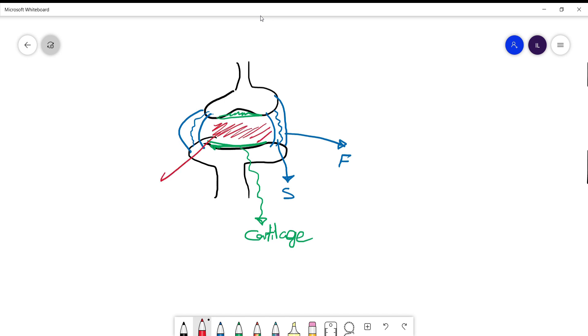And the synovial fluid which is composed mainly of hyaluronic acid. The hyaluronic acid's main function is to give viscosity to the synovial fluid.